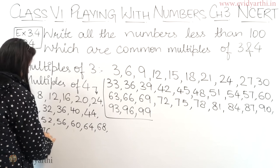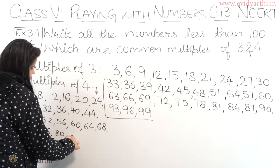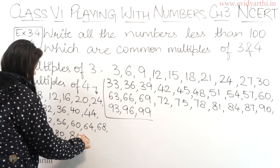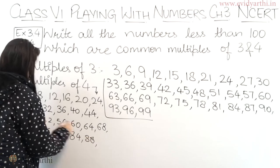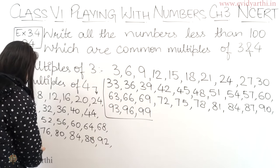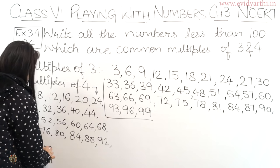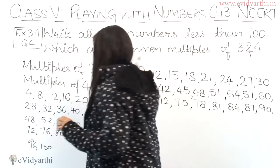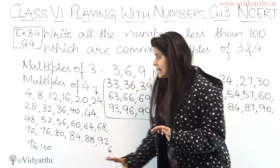Then 76, 80. Then 84. Then 88. And then this will be 92. Then 96. And then 100. Now after 100 we cannot write. It has to be less than 100. So this is all.